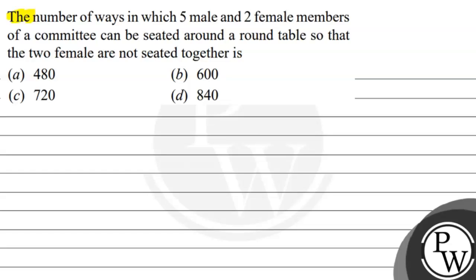Hello, let's see the question. The question says: the number of ways in which 5 male and 2 female members of a committee can be seated around a round table so that the 2 females are not seated together. The options are: A) 480, B) 600, C) 720, D) 840. The condition is that the 2 females are not seated together.